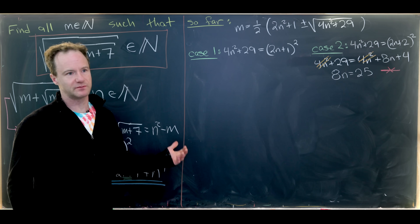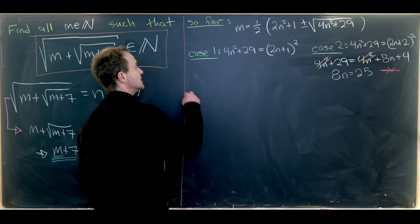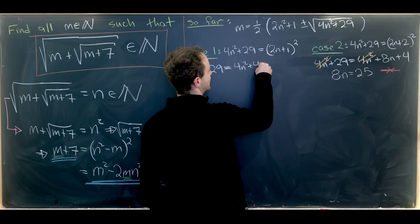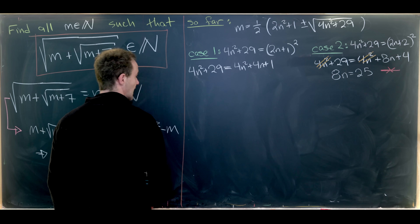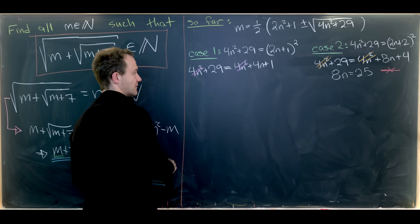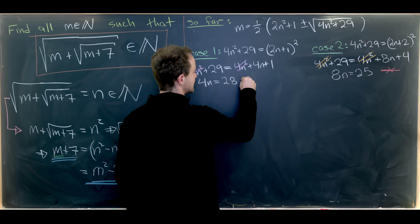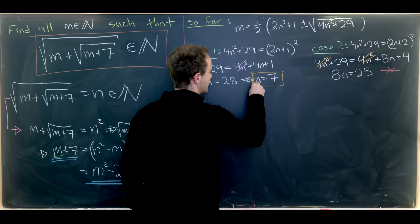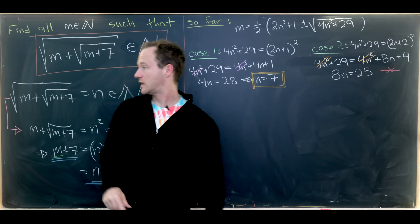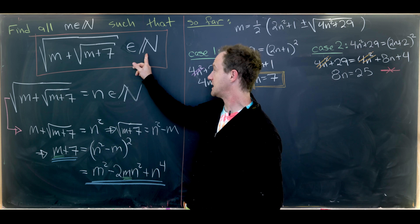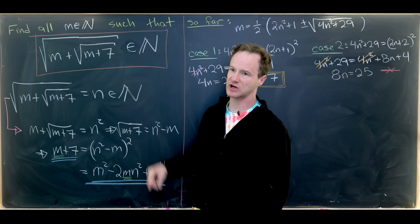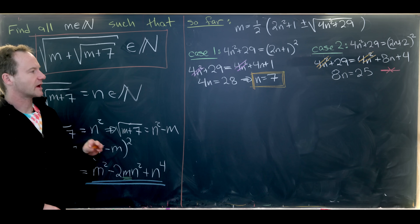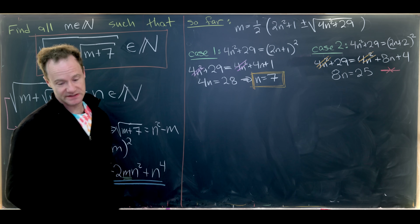Now let's look at case one. Expanding gives us 4n squared plus 29 equals 4n squared plus 4n plus 1. We can cancel the 4n squared from both sides, leaving us with 4n equals 28, meaning n equals 7. We've got a value for n — the only natural number that this expression can equal, at least when m is taken to be a natural number itself. Now let's see which values of m this corresponds to.